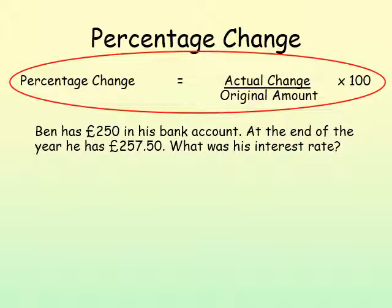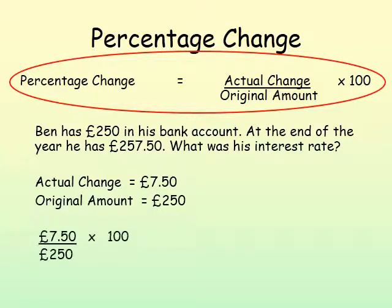Example one: Ben has 250 pounds in his bank account; at the end of the year he has 257 pounds 50. What was the interest rate? We are told the original amount but not the change, so we calculate it: 257.50 take away 250. We put that into the formula, and the answer we should get is 3%. You need to be comfortable with figures and work them out without a calculator.